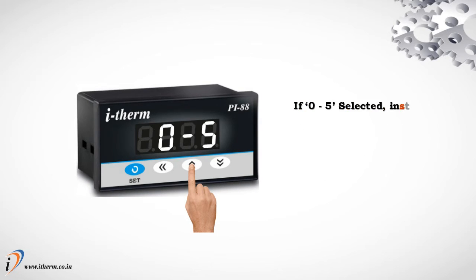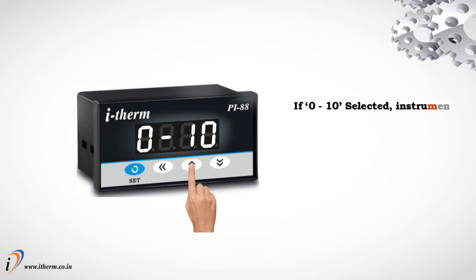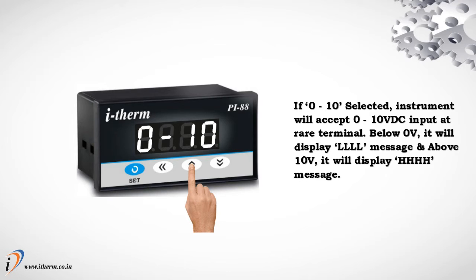If 0 to 10 is selected, the instrument will accept 0 to 10 volt DC input at the rear terminal. Below 0 volt, it will display an LLLL message, and above 10 volt, it will display an HHHH message.